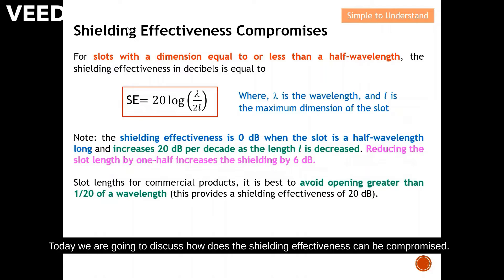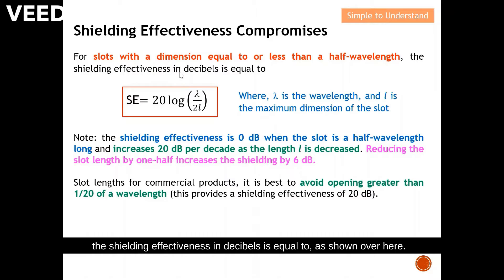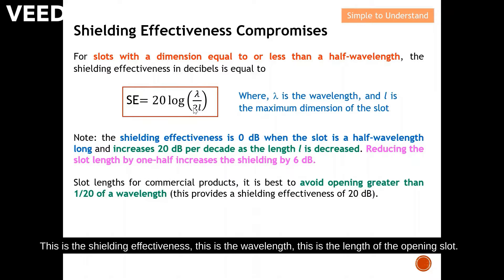Today we're going to discuss how shielding effectiveness can be compromised. For a slot with a dimension equal to or less than half of a wavelength, the shielding effectiveness in decibels is equal to the equation shown here. This is the shielding effectiveness, this is the wavelength, and this is the length of the opening slot. Let's discuss this equation first.